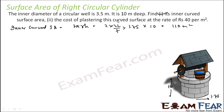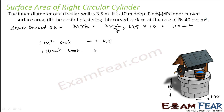Now find the cost of plastering this curved surface area at ₹40 per meter square. That is also easy. 1 meter square costs ₹40, so 110 meter square will cost 40 × 110, that is ₹4400. That is the answer.